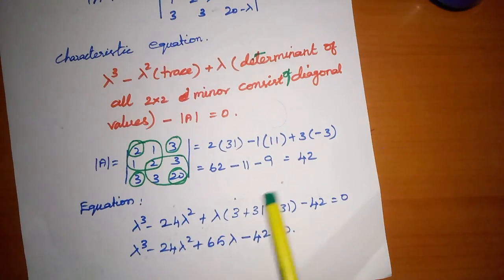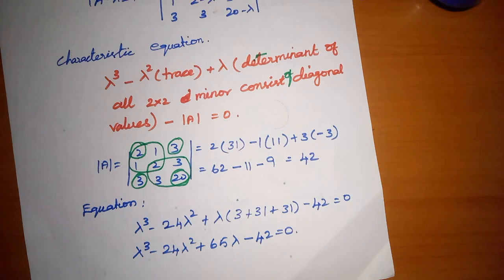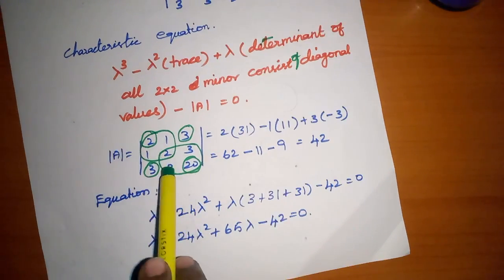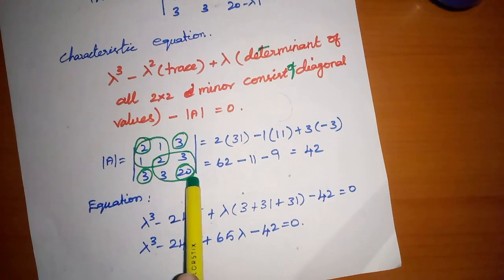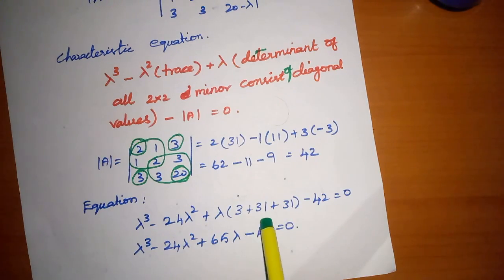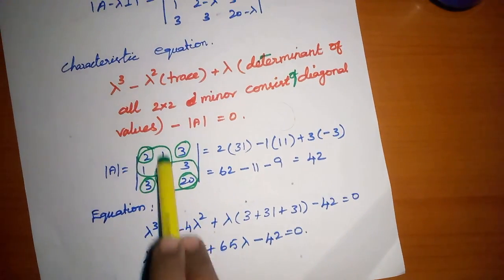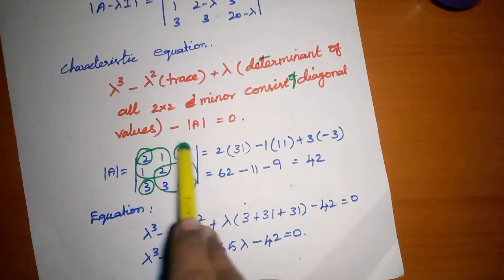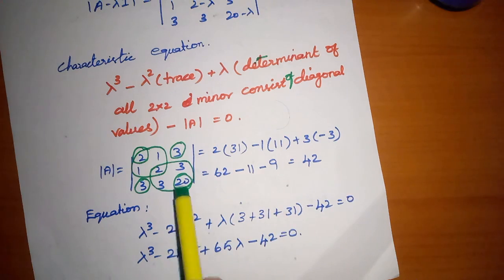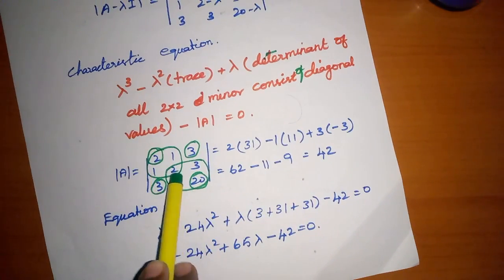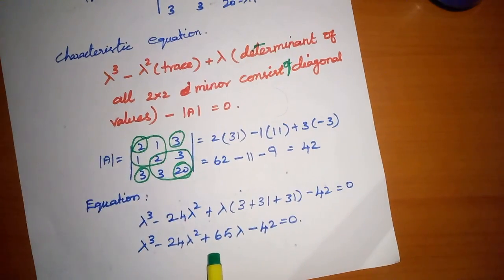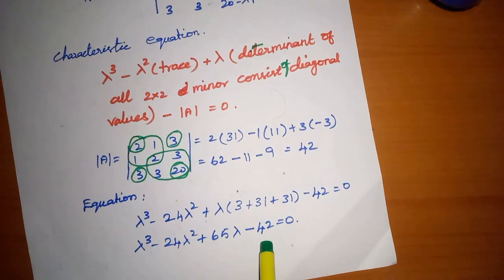Plus lambda into the sum of the minor values of diagonal elements. Cancelling the first diagonal element gives the minor with elements 2, 3, 3, 20: 2 into 20 = 40, minus 3 into 3 = 9, giving 31. Similarly the second minor gives 31. The third minor, cancelling element 20, gives 2 into 2 = 4, minus 1, plus 3. The total sum of minors is 65.